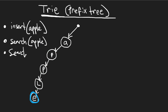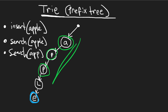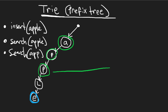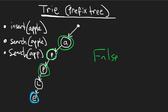Next, let's search for the word 'app'. Starting from the root, we do have lowercase 'a', we do have a lowercase 'p' after that, and we do have a second lowercase 'p'. But even though all three characters exist, we don't return true — this 'p' node is not marked blue, meaning it's not marked as the end of a word. We only inserted 'apple', not 'app'. So we return false: 'app' does not exist in our tree.